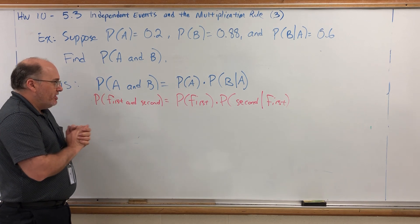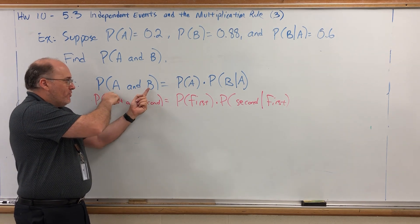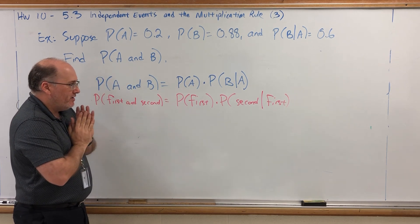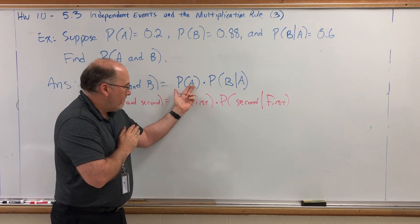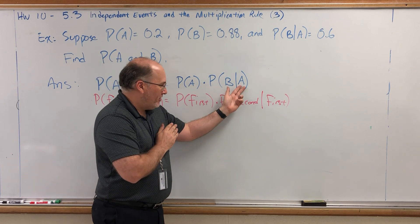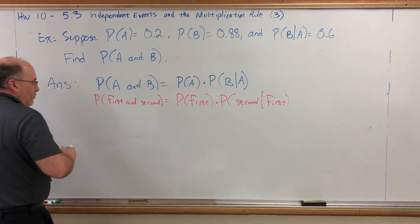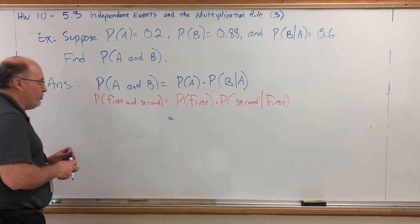The reason I point this out is, if for whatever reason I asked you the probability of B and A, then this would be B and this would be A given B, which we don't have. So going back to this problem, which numbers do we need to multiply?